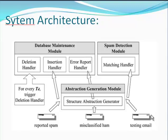Whenever we test the mail, first of all we need to generate an abstraction of the email. Then the matching handler procedure is performed. Whenever it is a misclassified ham, we need to generate an email abstraction and then the error report handler procedure is performed. Whenever the email is reported spam, we need to generate the email abstraction and then the insertion handler is performed.